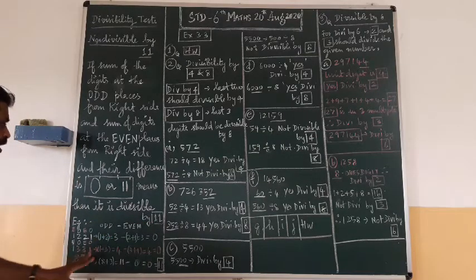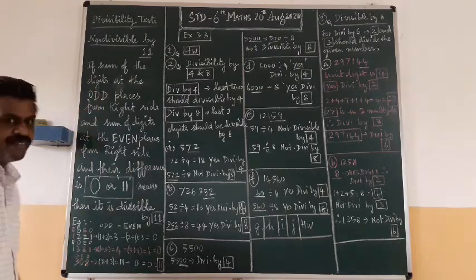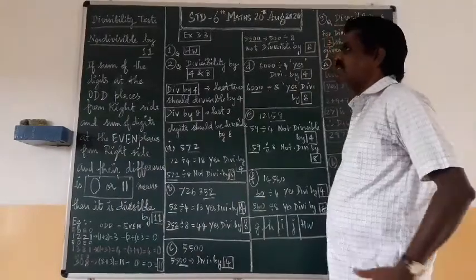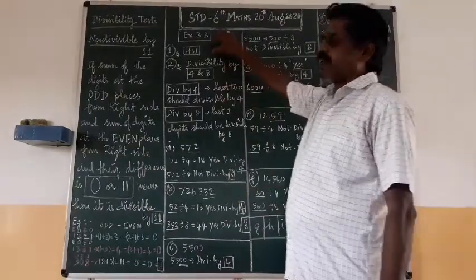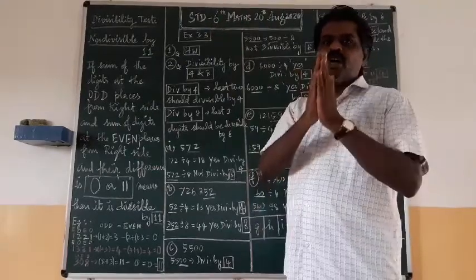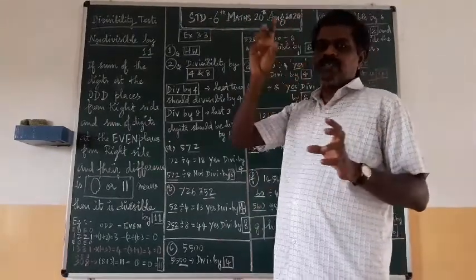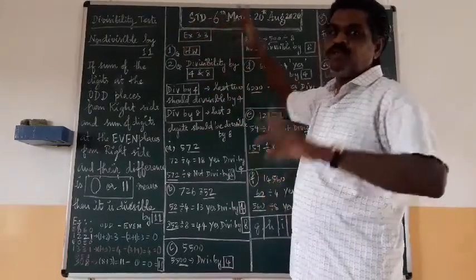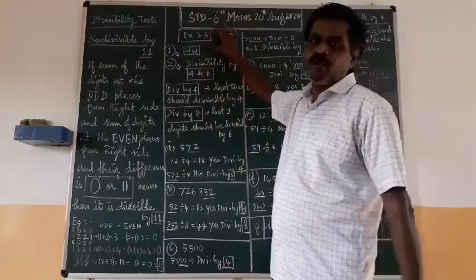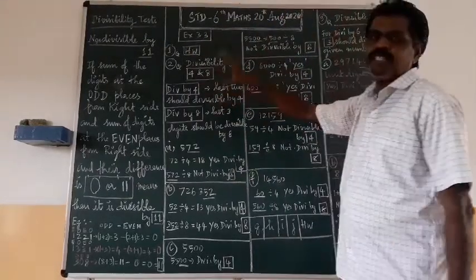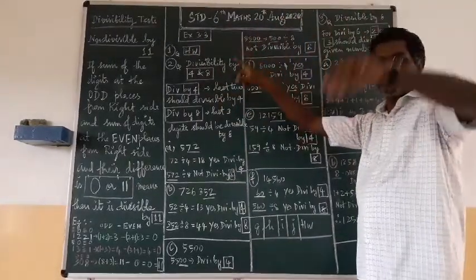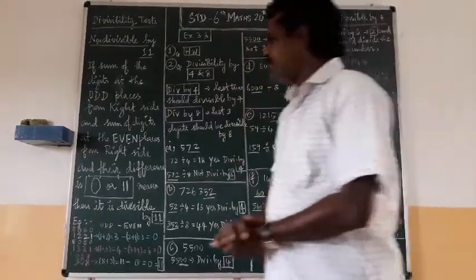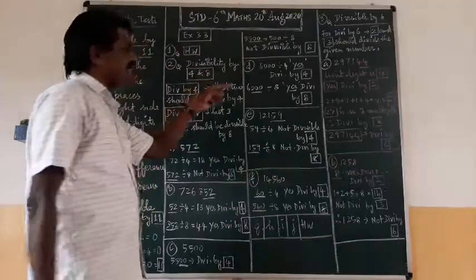That completes the divisibility test by eleven. Now for Exercise 3.3 — the first problem is given in color; take that as homework. Numbers are given and you must check whether they are divisible by two, three, four, six, nine, and eleven using the conditions we have studied. The second question is divisibility by four and eight.